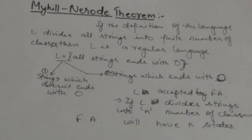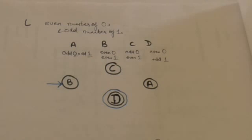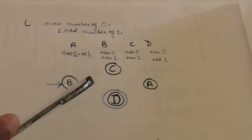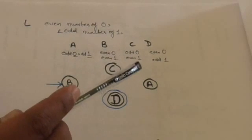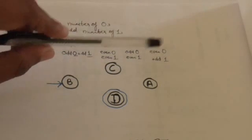Let L be a language — the set of strings which have even number of zeros and odd number of ones. This definition of language has divided all strings of 0 and 1 into four classes: A, B, C, and D. Class A corresponds to strings with odd number of 0s and odd number of 1s. Class B corresponds to strings with even number of 0s and even number of 1s. Class C corresponds to strings with odd number of 0s and even number of 1s. Class D corresponds to strings with even number of 0s and odd number of 1s.